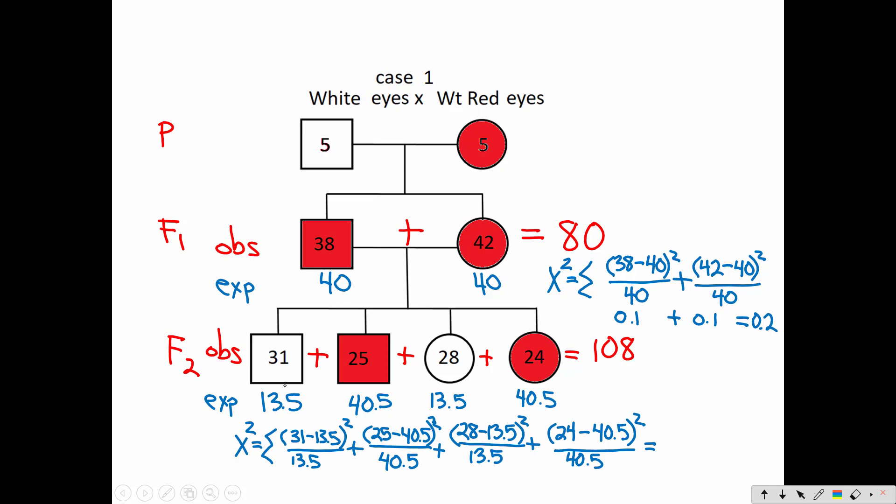So here I show my 31 observed minus 13.5 expected for my white-eyed males. Square that number and divide by the number expected. Here is my numbers for the red-eyed males. 25 minus 40.5 squared divided by 40.5. For the white-eyed females, 28 observed minus 13.5 expected. Square that divided by the expected, 13.5. And the last condition, red-eyed females. I had 24 observed minus 40.5 expected. Square that divided by 40.5.